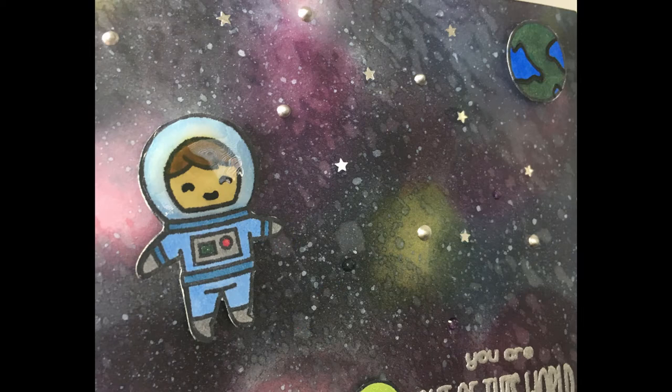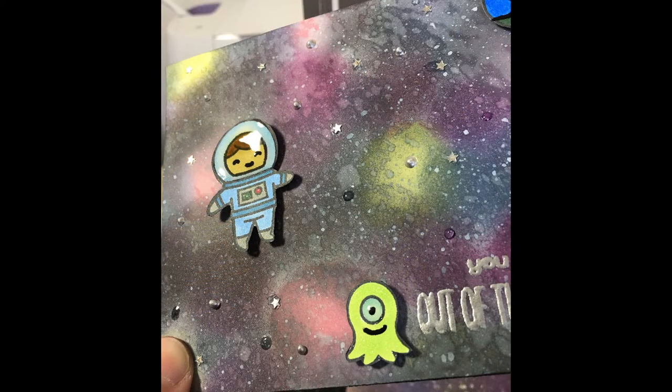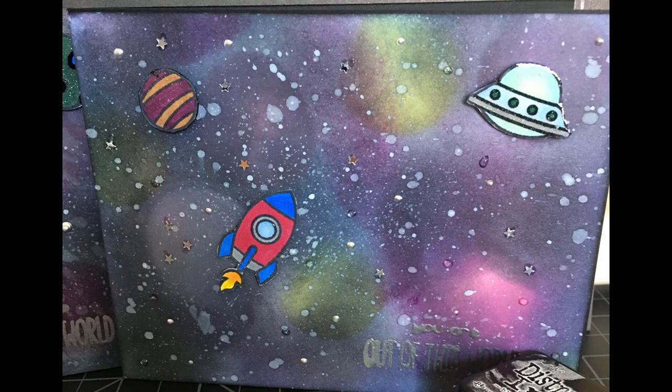And here's an up close shot of little space guy there. You can see he is really shiny. I wanted to try to give his helmet there kind of a real type of helmet look. So the glossy accents does make that really shiny and give it that look I was looking for. And there you have two really cute galaxy cards. I really like how these came out.